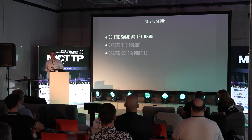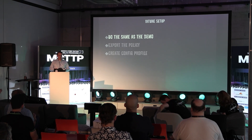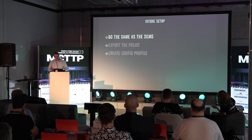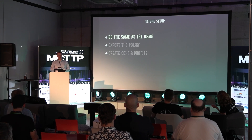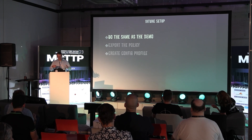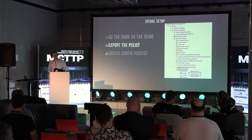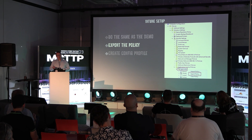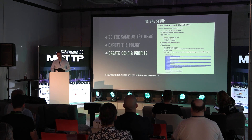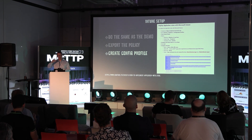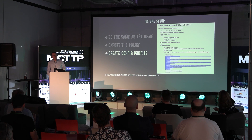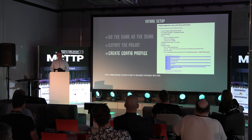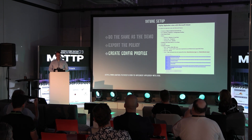If you have modern management and want to use Intune for deploying AppLocker, the process is pretty much the same. You set up the rules the same way, then export the policy from the GUI. Go into the Intune portal, create a new configuration profile, copy out the relevant section into the config profile, and deploy it. There's a link if you're interested in the nitty-gritty details.